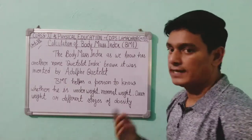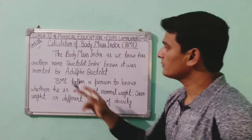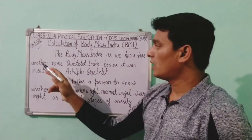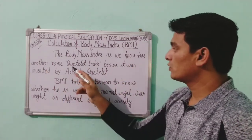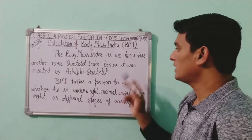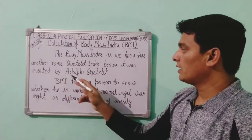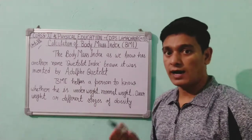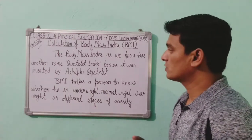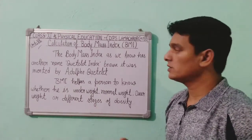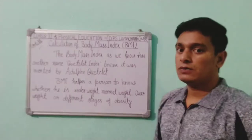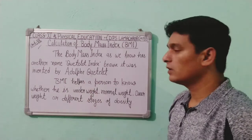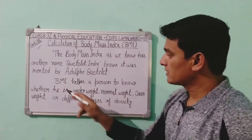So what is BMI? The Body Mass Index has another name which is the Quetelet Index, because it was invented by Adolphe Quetelet. This question can be asked in short answer or very short answer type questions — the BMI was invented by whom? The answer is Adolphe Quetelet.